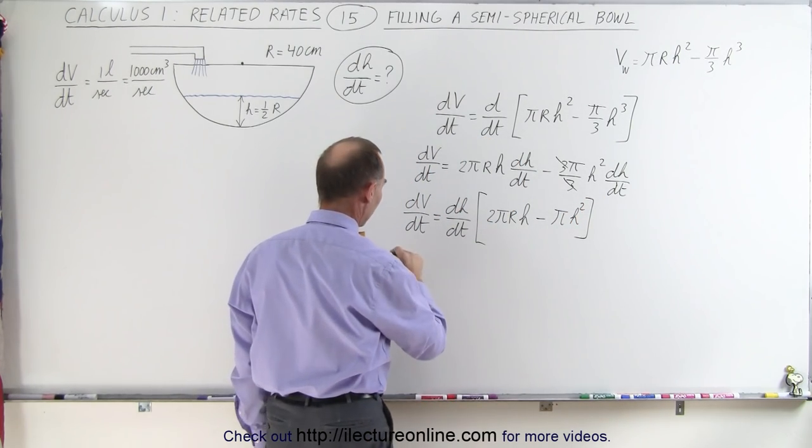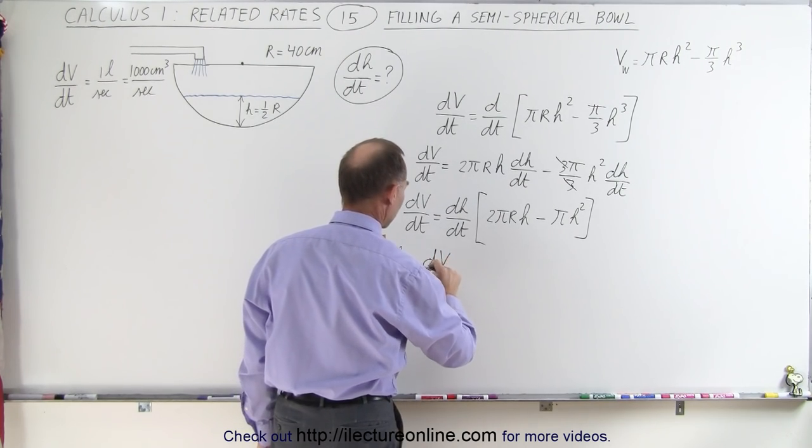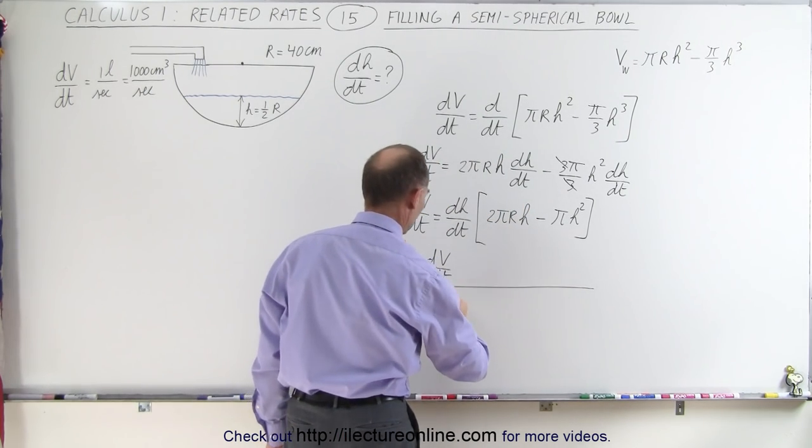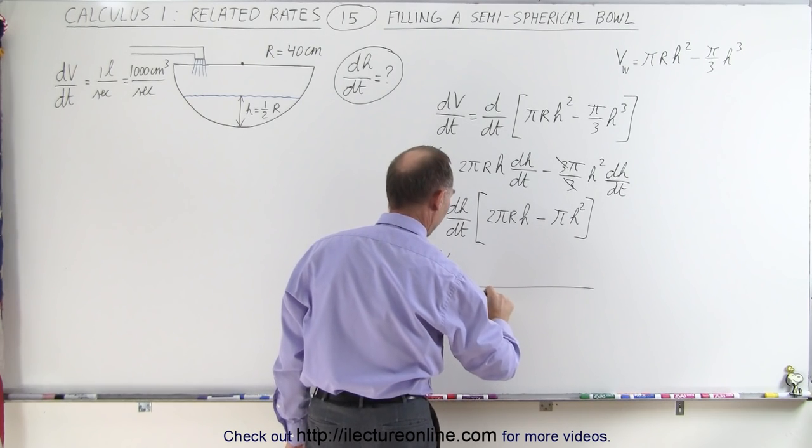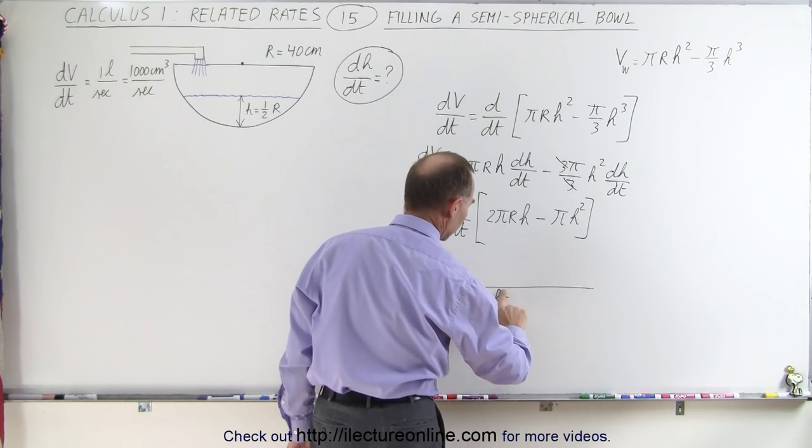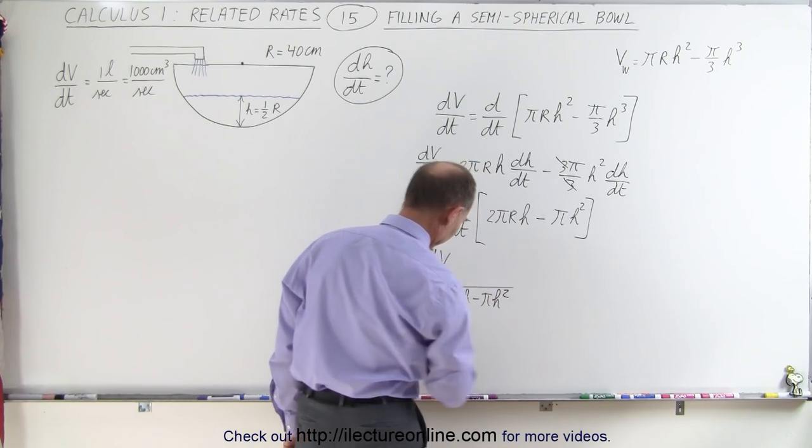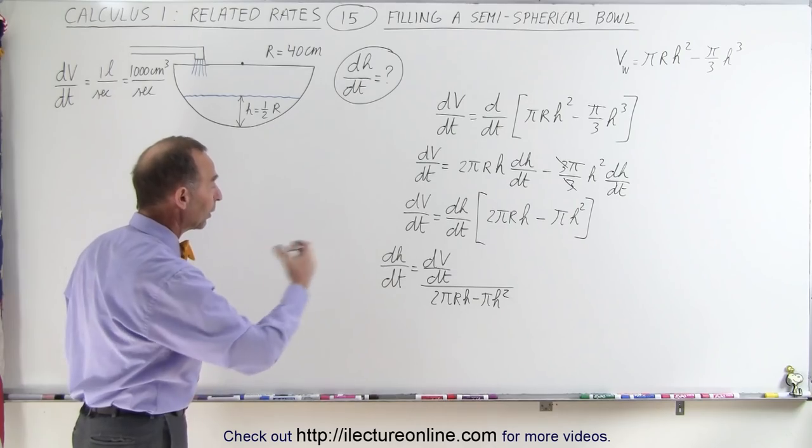And so we can then write dh dt as dv dt divided by 2 pi r h minus pi h squared. That should be a square. And I made this line a little too long, so let's shorten it. Alright, so that's dh dt, I think now we're ready to plug in what these are equal to.